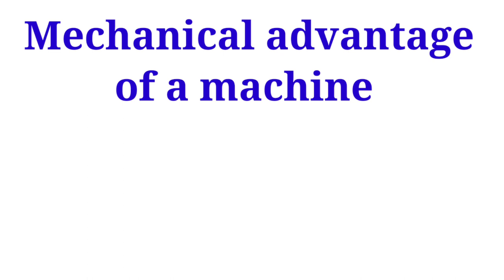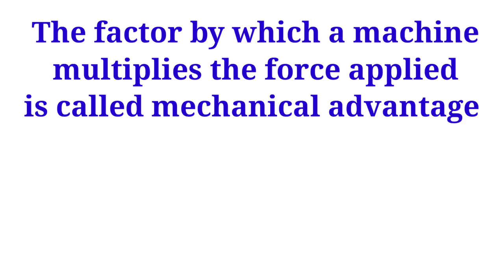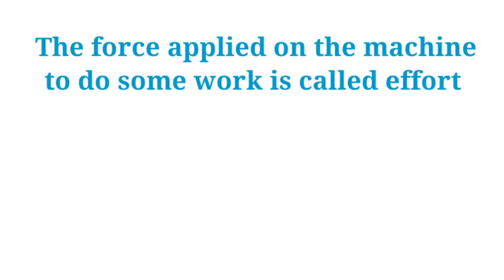The factor by which a machine multiplies the force applied is called mechanical advantage. The force applied on the machine to do some work is called effort. The force applied by the machine on the object is called the load. Mechanical advantage (MA) equals load divided by effort. The mechanical advantage of a machine is the ratio of the load to the effort.